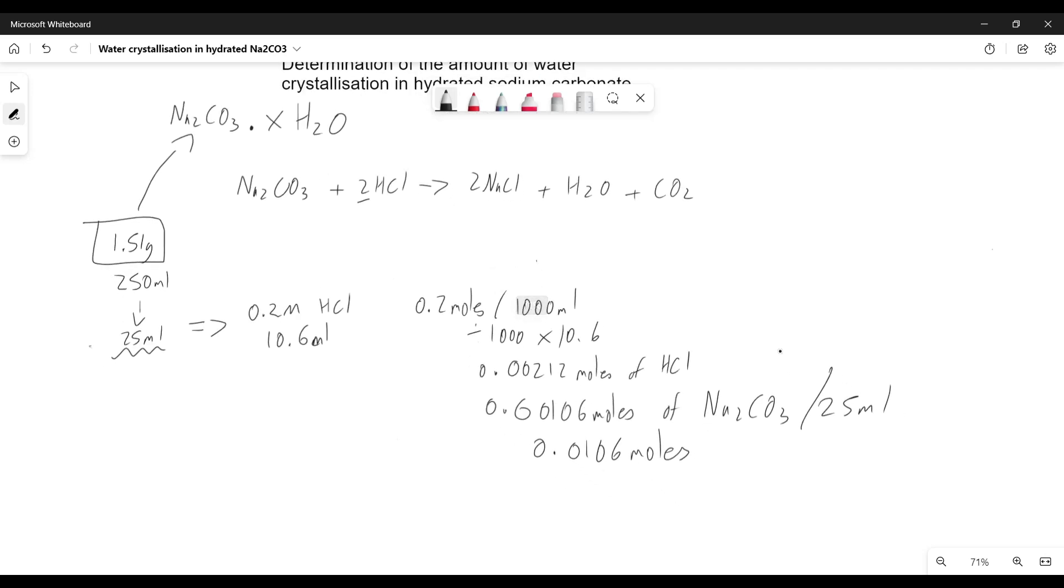Now, we want to figure out how much of our 1.51 grams of this hydrated sodium carbonate is just sodium carbonate, so we can find out how much is water later on. How do we get from moles to grams? We times this by the relative molecular mass, which in this case will be 106 if we add up all these molecules here: two sodiums, a carbon and three oxygens.